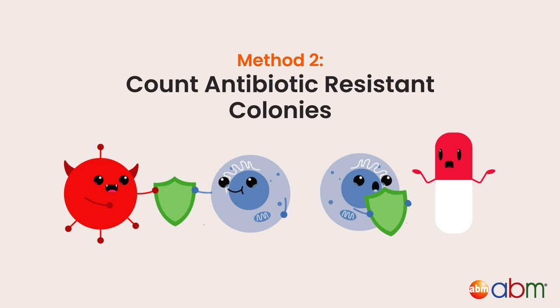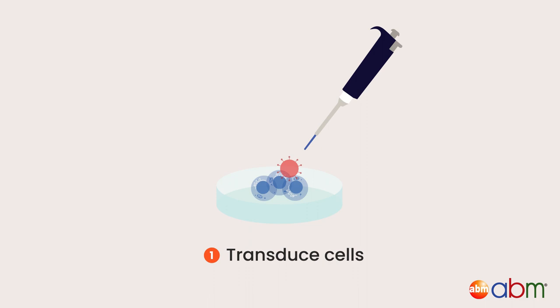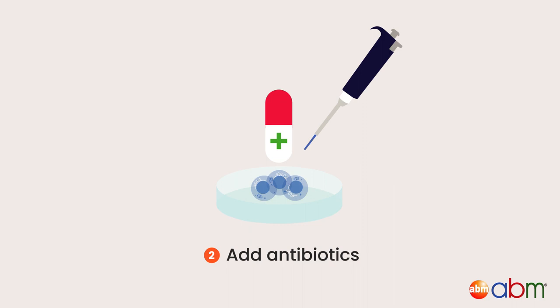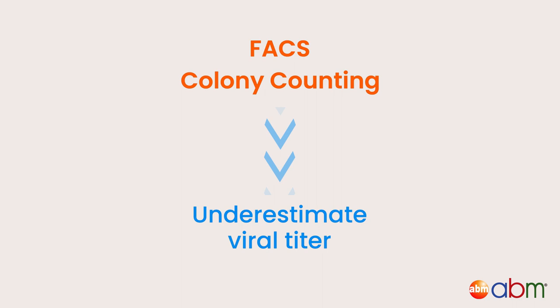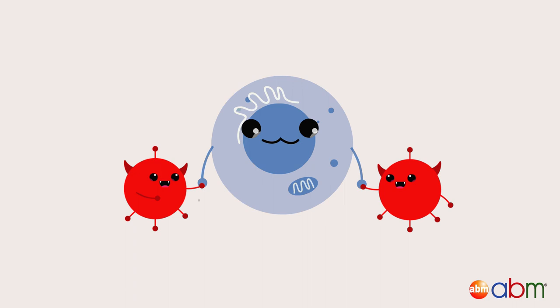Method two: count antibiotic resistant colonies. Start by transducing target cells with serial dilutions of a viral prep, then treat dilutions with an antibiotic and count how many colony forming units are still present. Both the FACs and the colony counting method often underestimate viral titer, since both assays cannot determine if a cell has been infected by more than one viral particle.